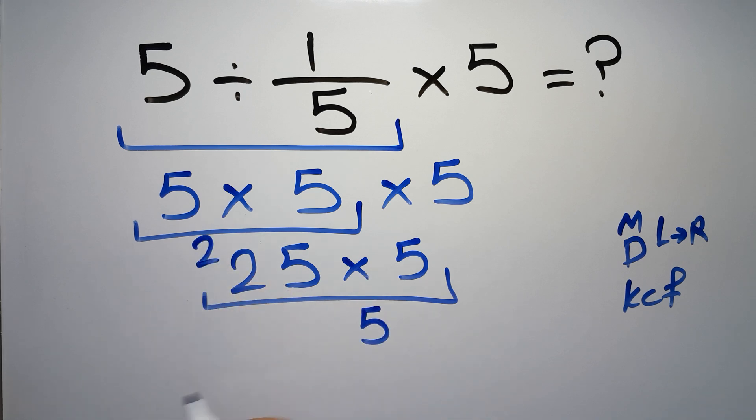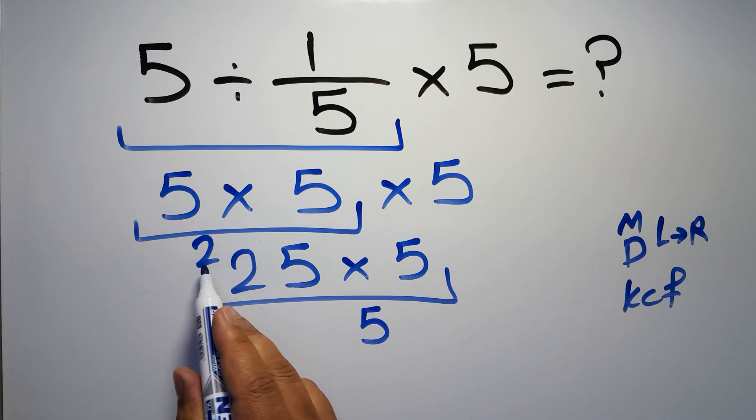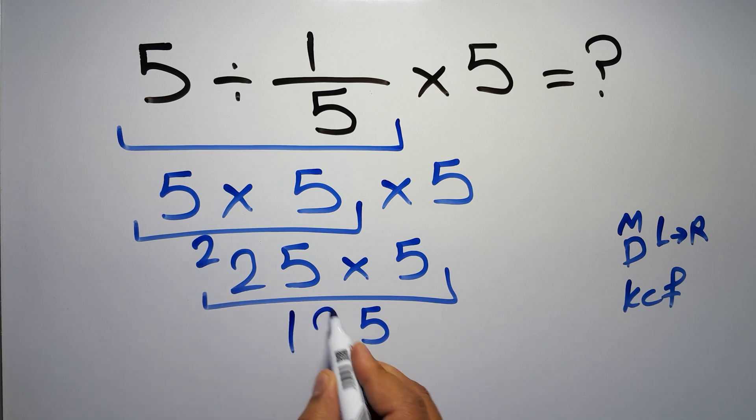5 times 5 gives us 25. We write 5 here and carry 2 here. 5 times 2 equals 10, and the 10 plus 2 gives us 12. So we have 125, and this is our final answer to this problem.